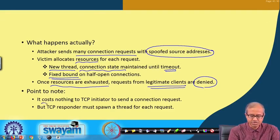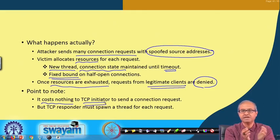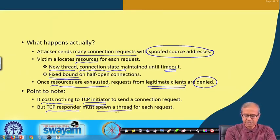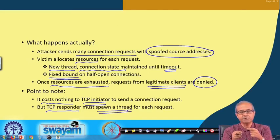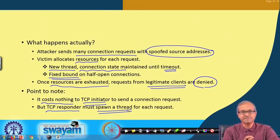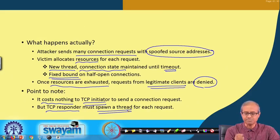The table allows a fixed number of half-open connections to be maintained, but if the table gets exhausted, no further requests will be accepted and even legitimate client requests will be denied. The key point is that when the attacker mounts the attack, it costs nothing to the attacker — the TCP initiator just sends a packet and no buffer space is reserved at the attacker's site. But the responder spawns a thread and reserves an entry in a table for every request. There is an asymmetry — only the receiver incurs cost — that is why this kind of attack is possible.